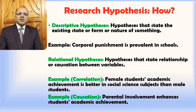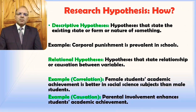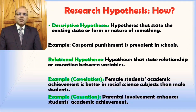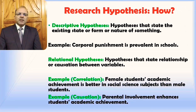Relational hypotheses are hypotheses that state a relationship or causation between variables. There are two types of relational hypotheses: one shows relationship between variables and the other shows causation, meaning one variable or variables might be the cause of another variable or variables. An example of a correlational hypothesis is: female students' academic achievement is better in social science subjects than male students — here the researcher wants to establish a relationship between gender and academic achievement.